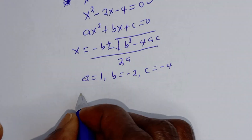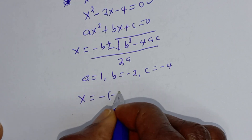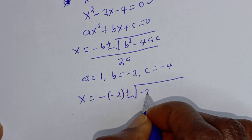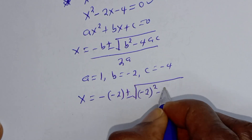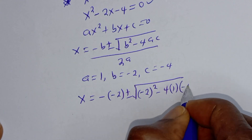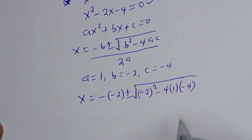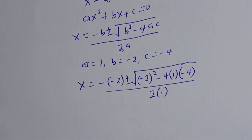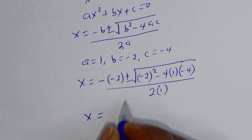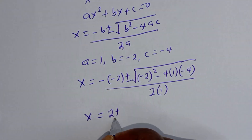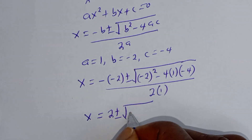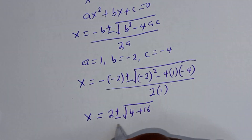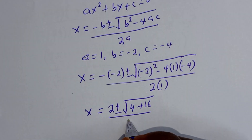Then x is equal to minus bracket minus 2, plus or minus square root of minus 2 squared minus 4 multiplied by 1 multiplied by minus 4, over 2 multiplied by 1. That gives 2 plus or minus square root of 4 plus 16, over 2.